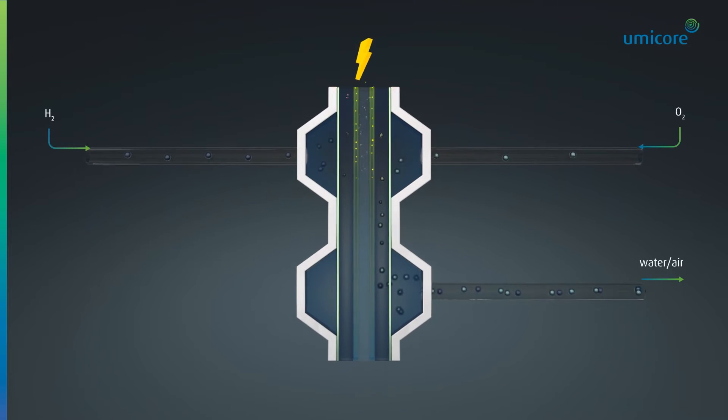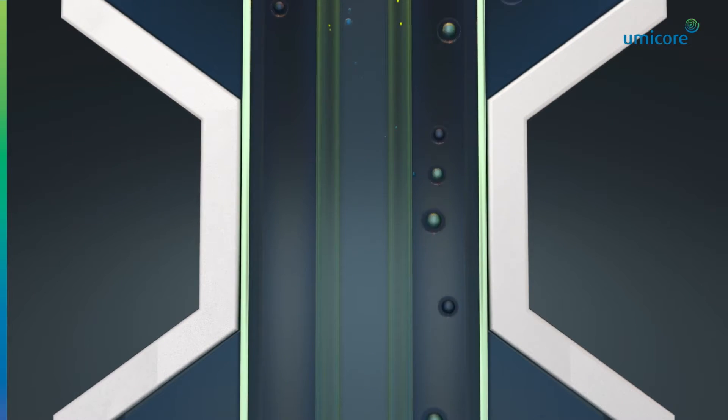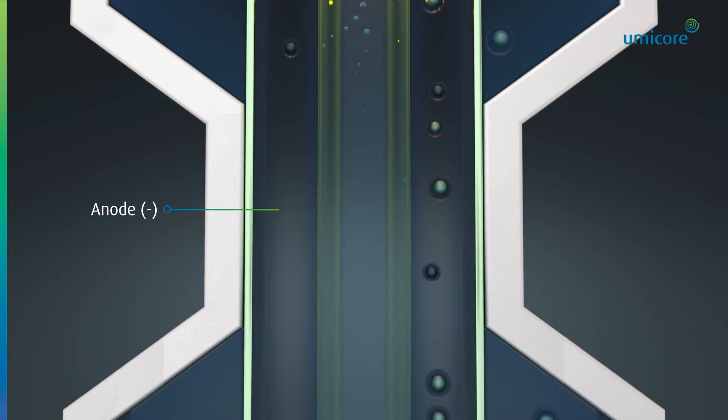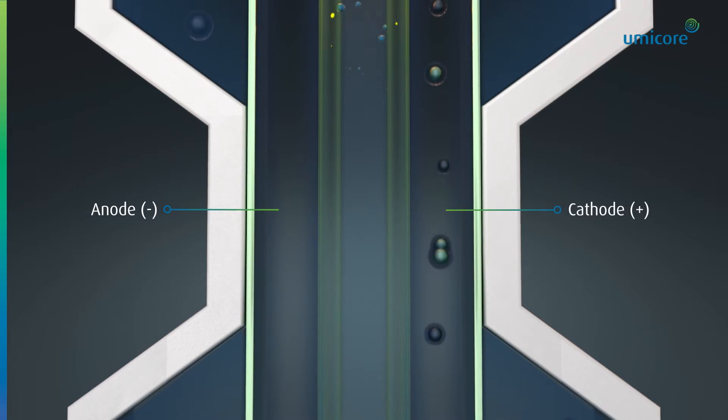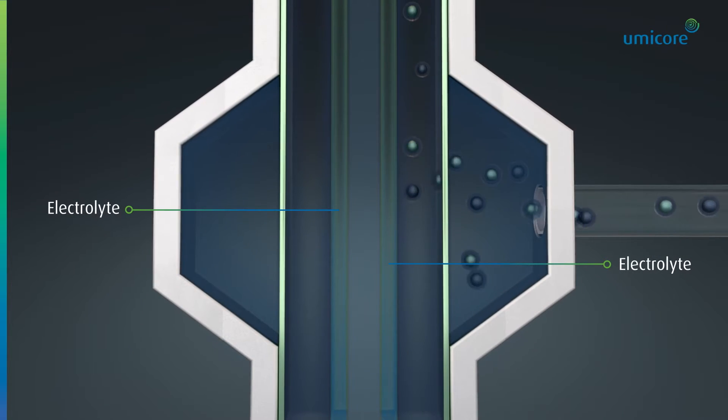Let's take a closer look at how fuel cells work. Every fuel cell consists of two electrodes, a negative electrode, anode, and a positive electrode, cathode, which are both wrapped around an electrolyte.